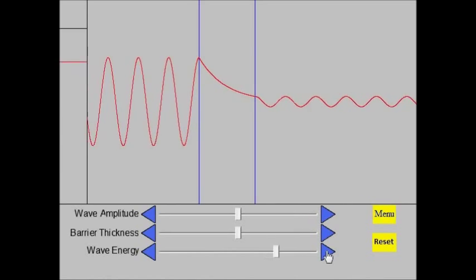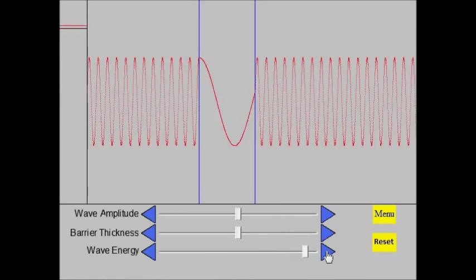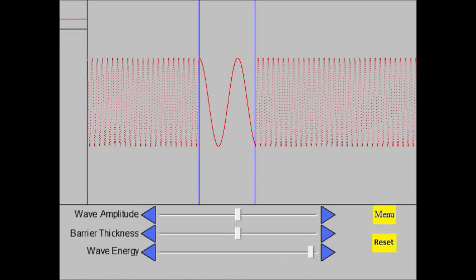If the wave energy is greater than that of the barrier, then nearly all of the wave passes through the barrier, with a longer wavelength.